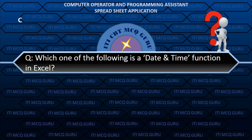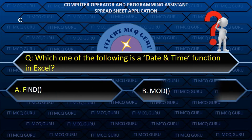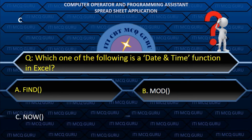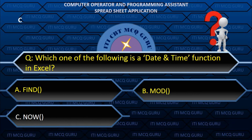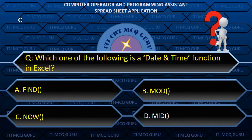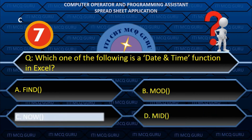Which one of the following is a date and time function in Excel? C. NOW().